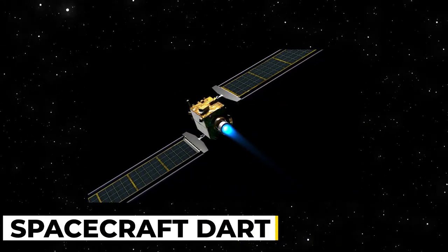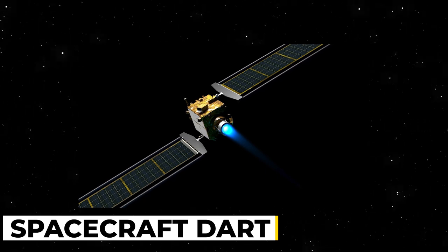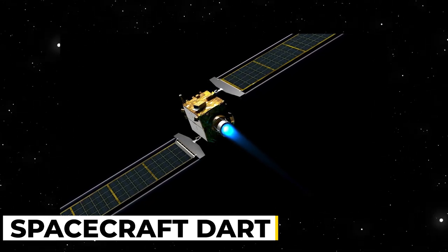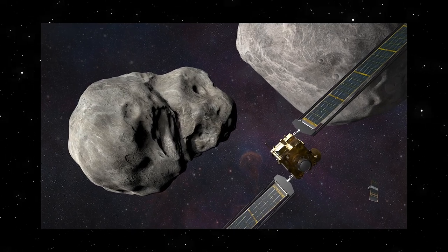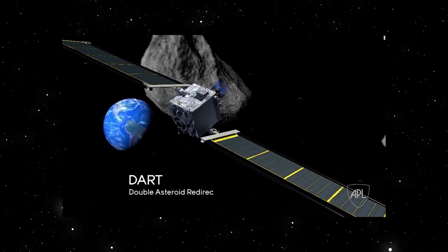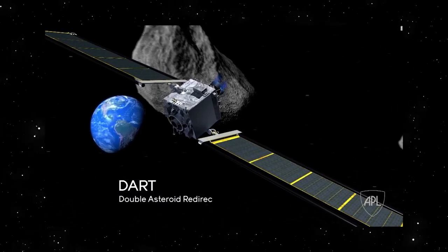The DART spacecraft was simple. The main vehicle had a box form with dimensions of about 3.9 by 4.3 by 4.3 feet, or about the size of a refrigerator. When fully extended, each of the two substantial solar arrays was 27.9 feet in length.